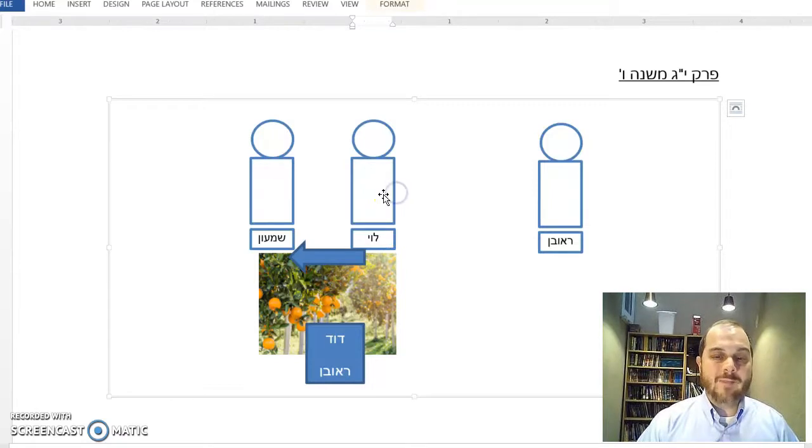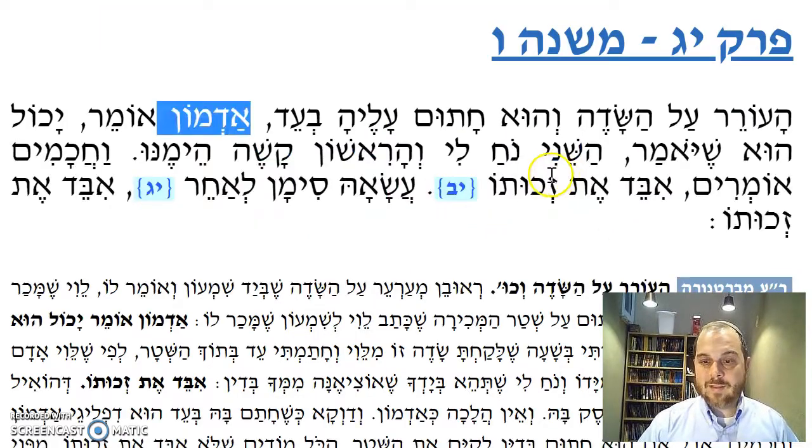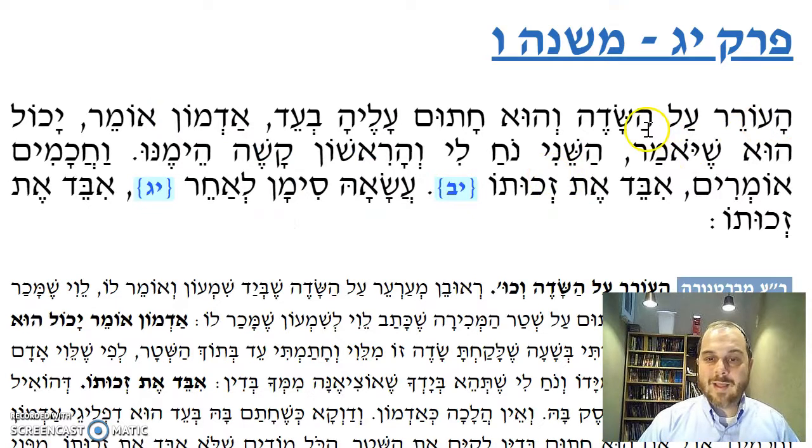Same thing is true about Levi's field. Now Admon mentions a very interesting case in our Mishnah. Ha'orer al hasadeh - a person complains about the ownership of a field. V'hu chatum aleha b'eid - but the person complaining is signed as a signatory on a contract to sell that field.